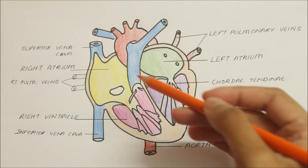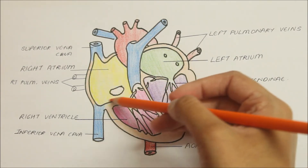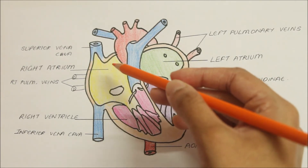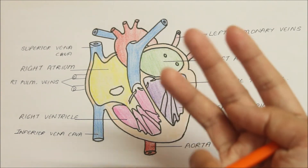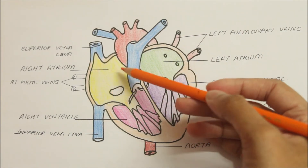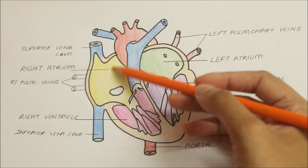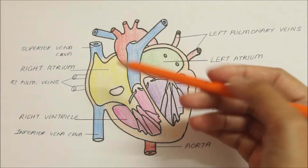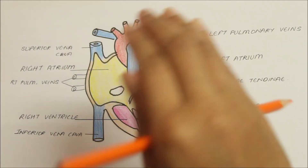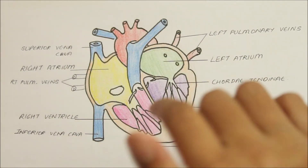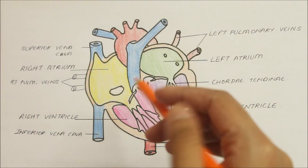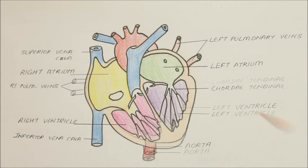Now let's look at the internal features of the right atrium. The interior of the right atrium can be divided into three parts: the smooth posterior part or sinus venarum, the rough anterior part or pectinate part, and the interatrial septum between the two atria.